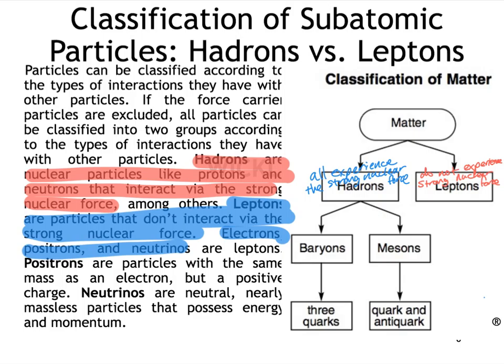A positron is basically like an electron but with a positive charge rather than negative, but with all the same other properties — that's why it's called a positron. A neutrino is neutral, which you can probably tell by the name, and it almost has no mass at all, so it's sort of like a neutral electron. These leptons are all electron-like in that they have very little mass, but only electrons have a negative charge, whereas positrons are positive and neutrinos are neutral.